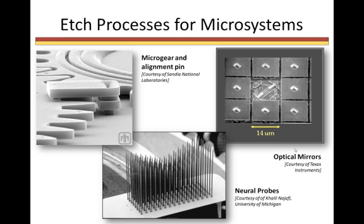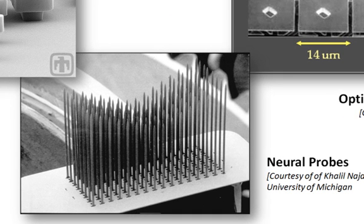The type of etch process used depends upon what layer is being etched. Here we see several micro-devices made possible by etch processes developed for microsystems technology. Many were originally developed for integrated circuits. Some unique processes create objects like this neural probe. The tips are less than 10 nanometers in diameter, while the length is between 1 and 100 micrometers.